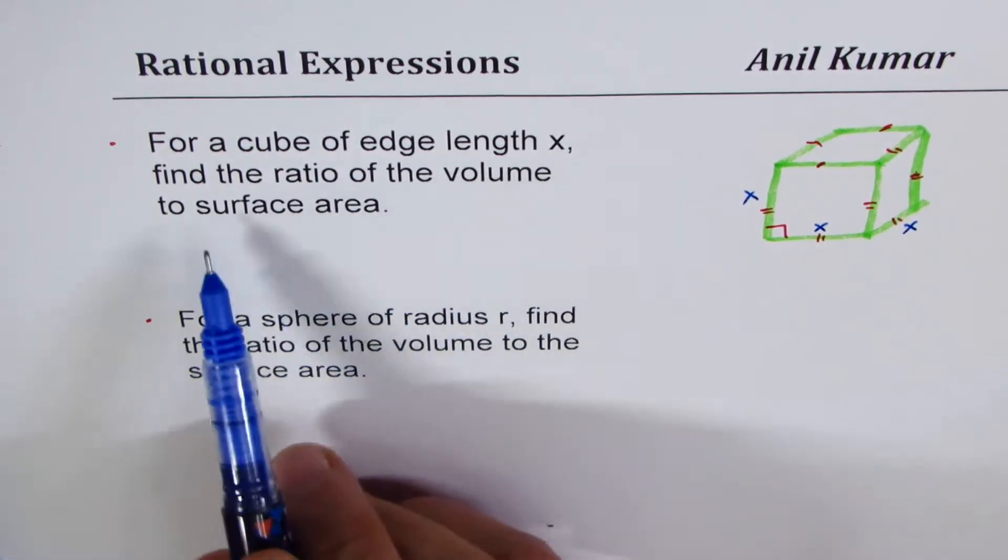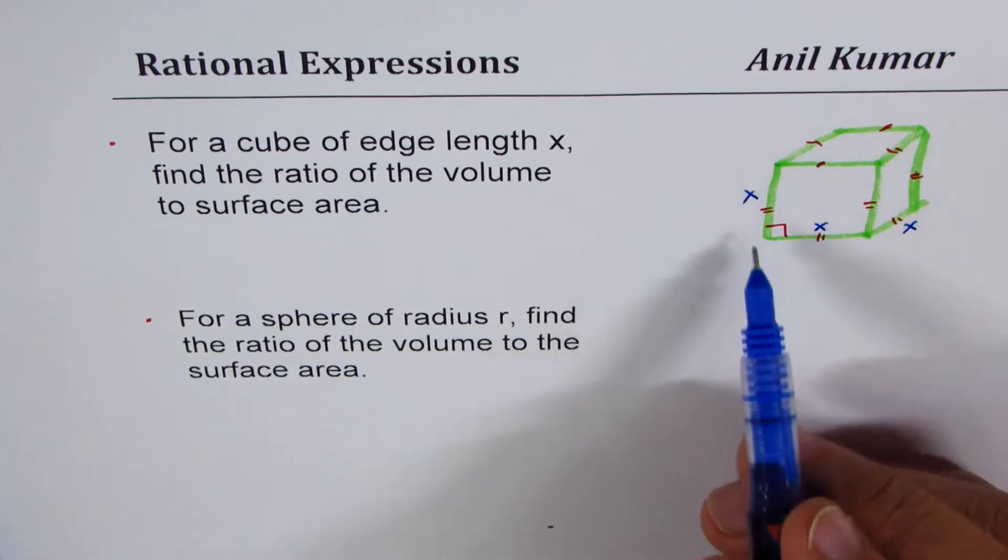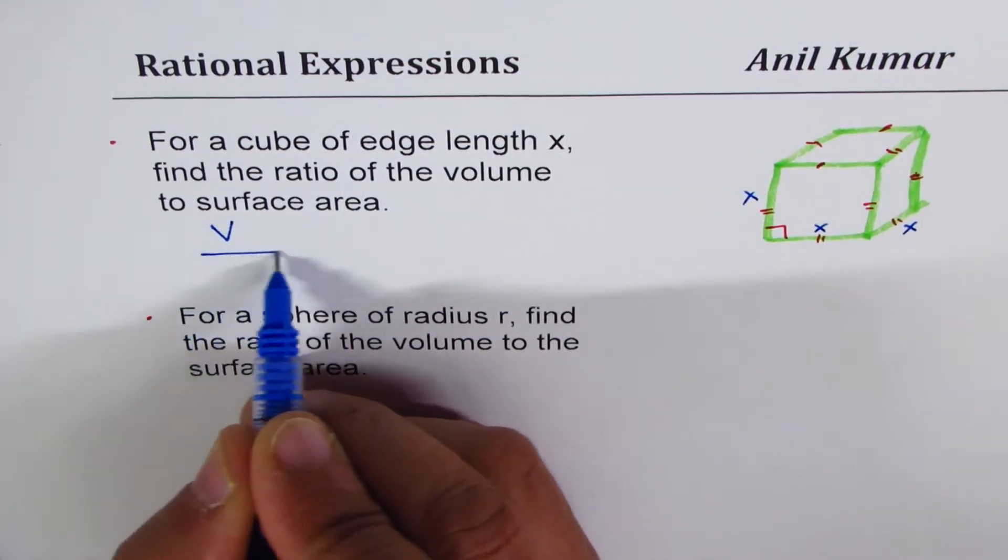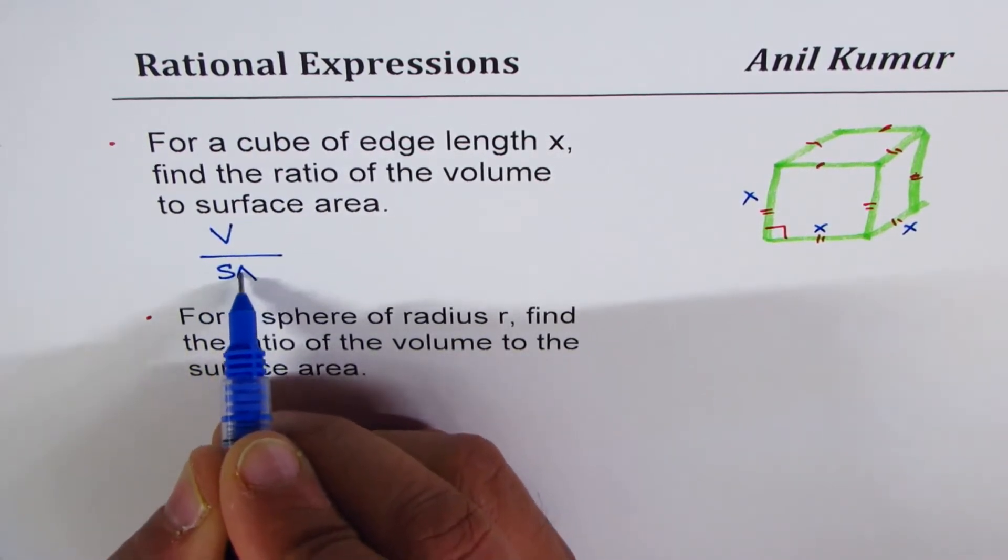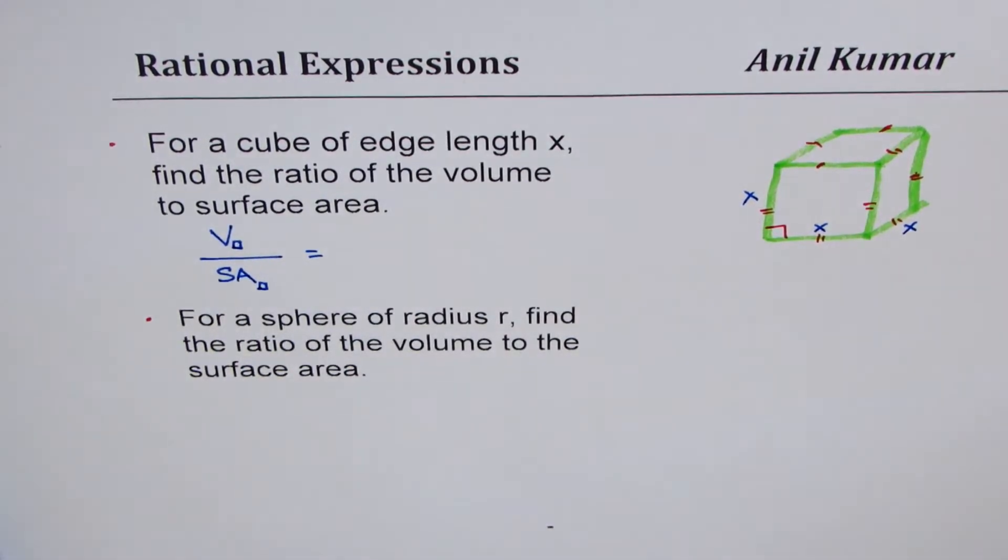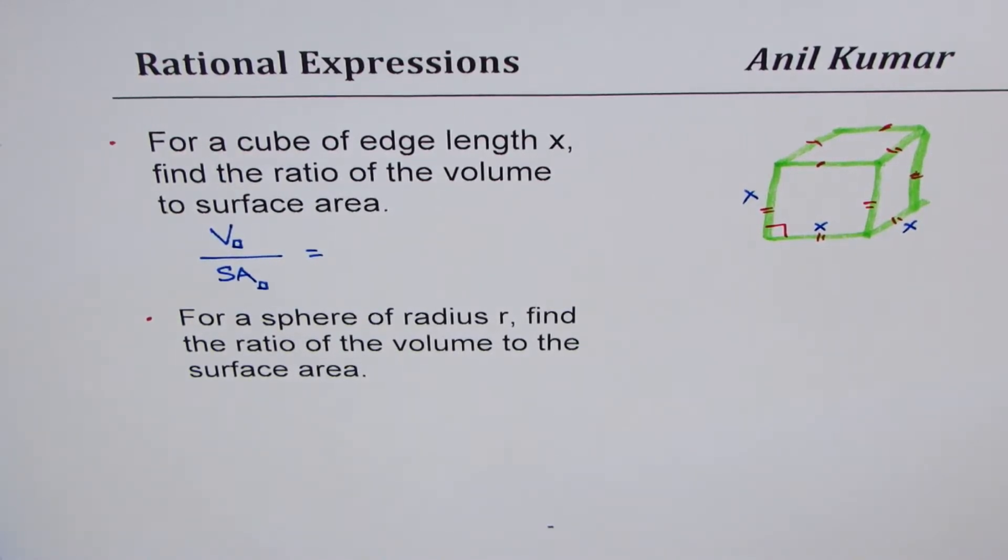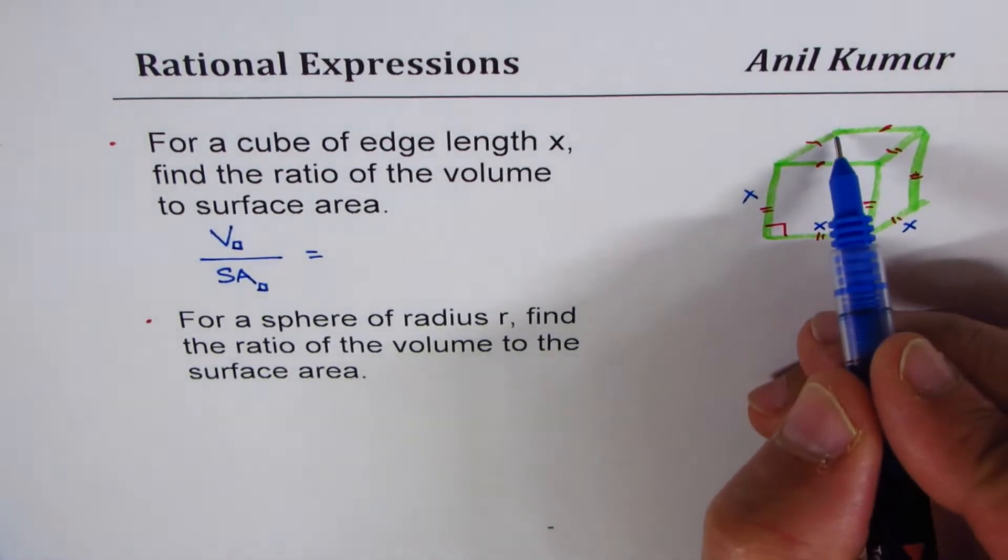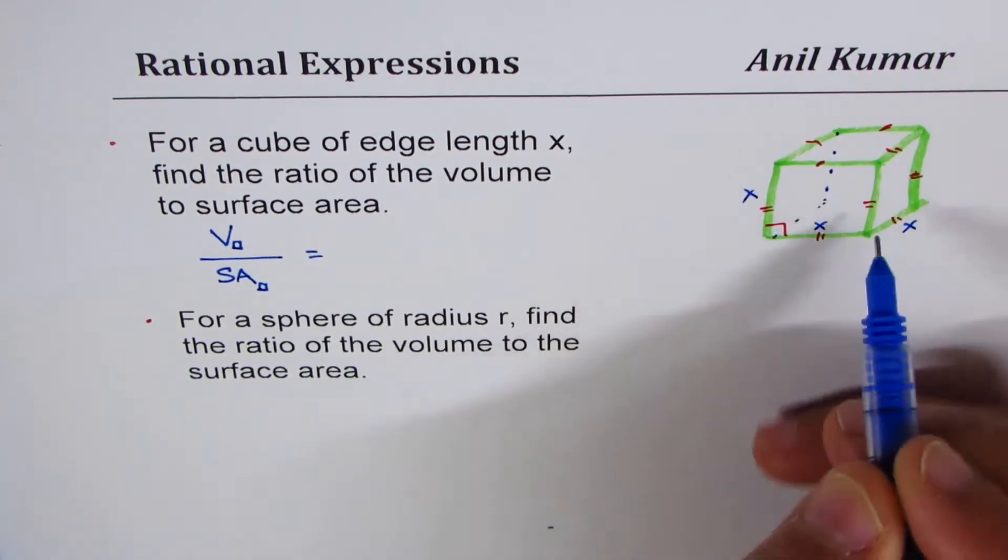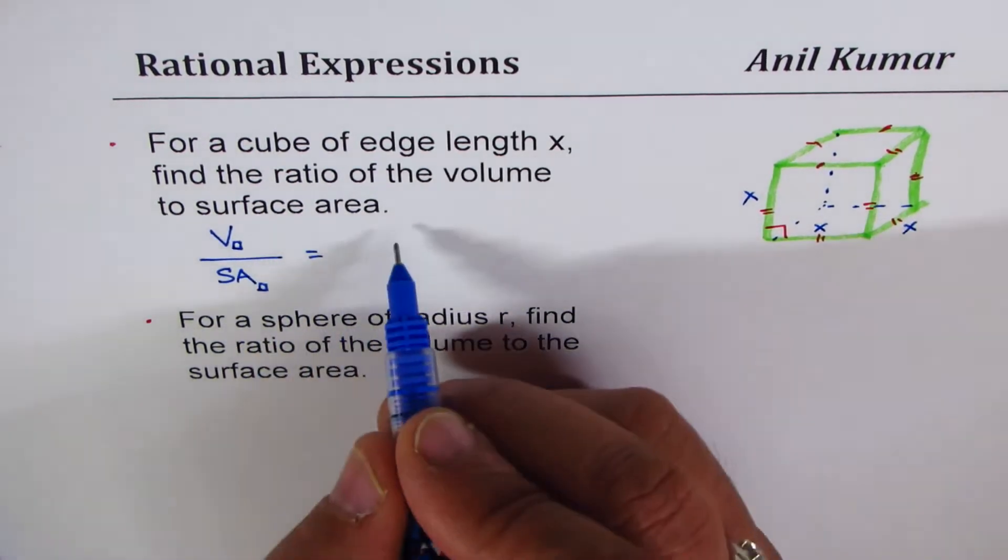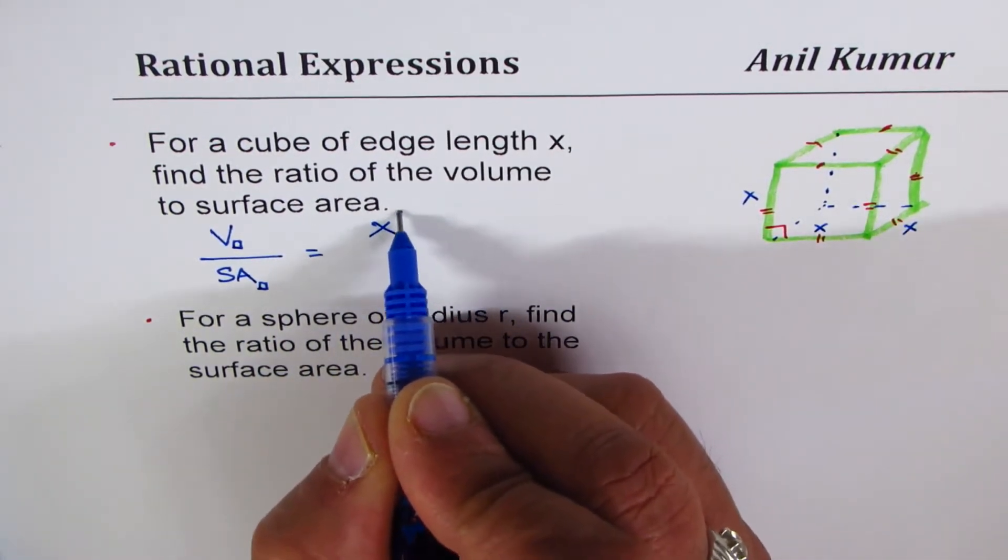Find the ratio of volume to surface area. Now, what is the volume of this? So we want to find volume over surface area. In such questions, you should know the formulas. What is the volume of a cube? The volume of the cube is area of the base times height. All sides are equal x square times x. So the volume is x cube.